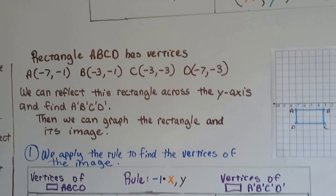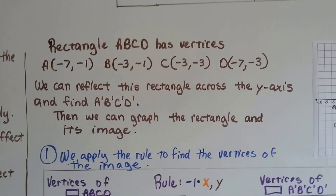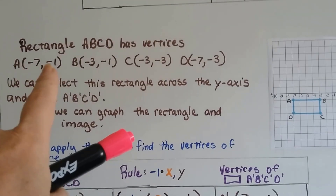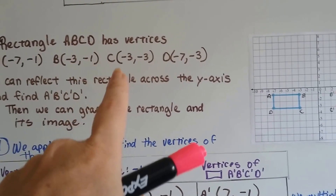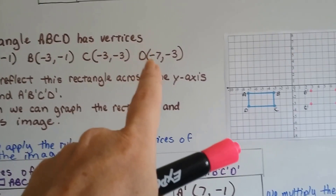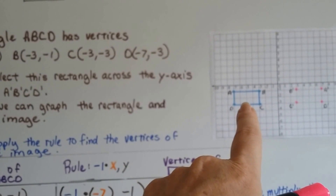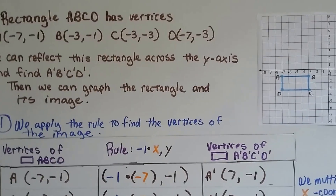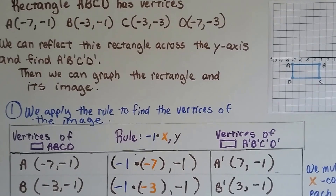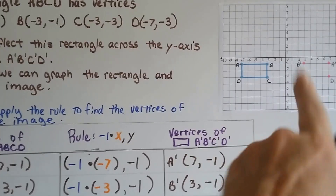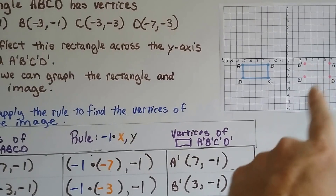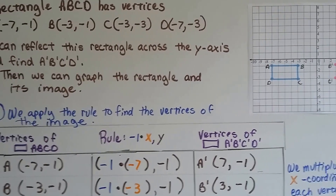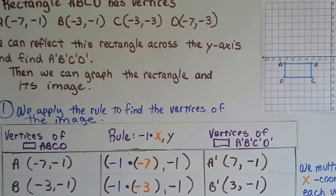We have rectangle ABCD with vertices: A at (-7, -1), B at (-3, -1), C at (-3, -3), and D at (-7, -3). It's plotted on our coordinate plane. We can reflect this rectangle across the y-axis over to the fourth quadrant and find A prime, B prime, C prime, D prime. Then we can graph the rectangle and its image.